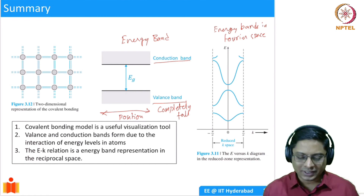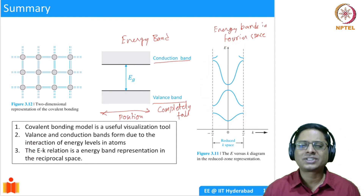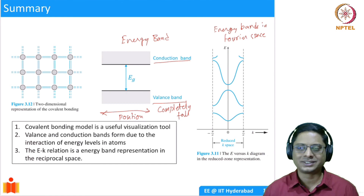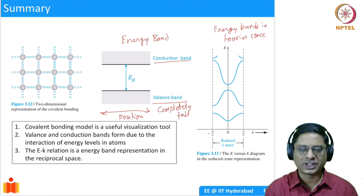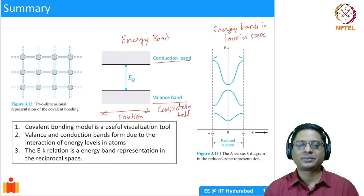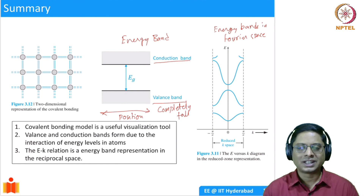All of that can be represented in the graph shown. I just want you to be aware that there are two types of band diagrams: one as a function of position X, and the other as EK in Fourier space. These three things, if you remember from today's lecture and understand them, you'll be ready for the next lectures. With that, I would like to stop. Thank you very much for your attention. We will meet again in the next lecture.